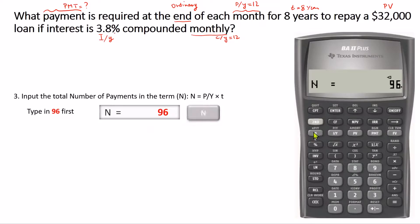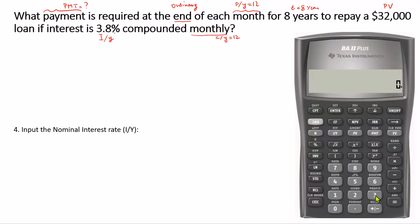Now we press clear. For the interest rate, all we need to do is enter 3.8 and then press I/Y.